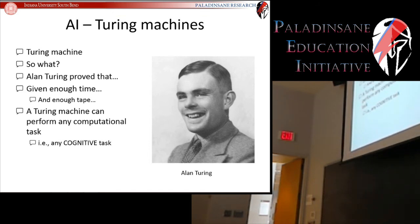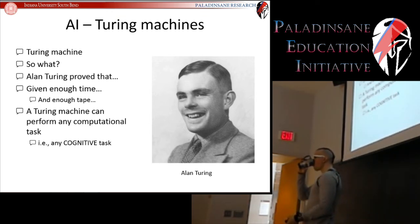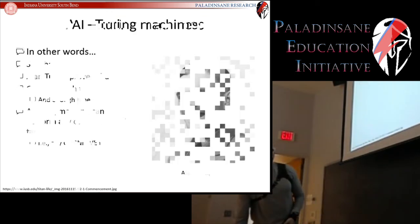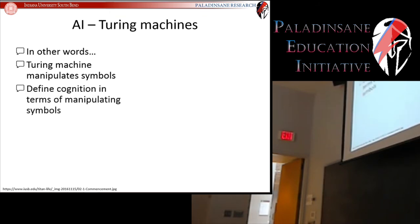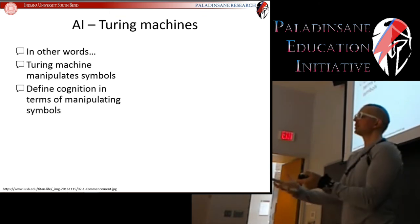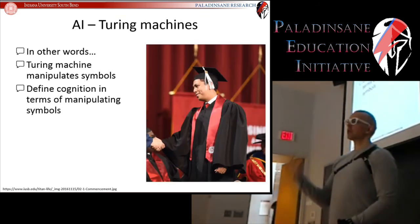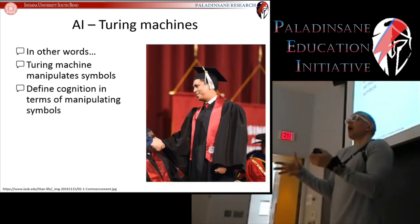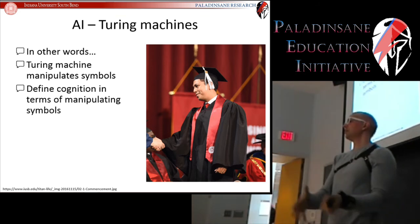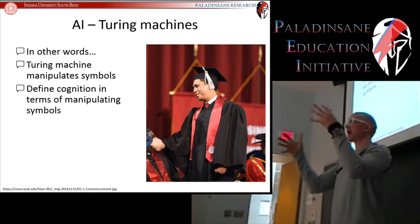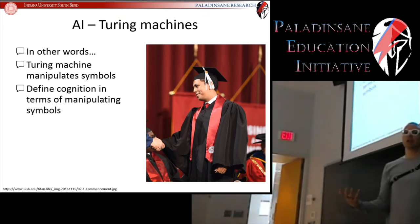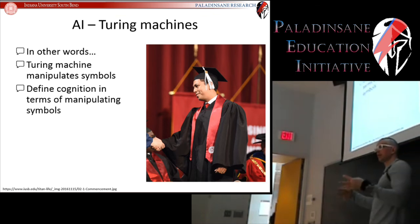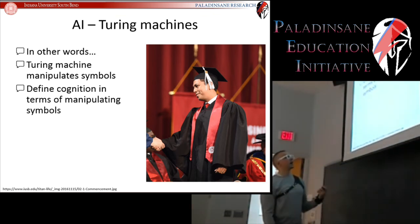In other words, Turing machines manipulate symbols — they define cognition in terms of manipulating symbols. That's why in cognitive psychology, everything we're going to see is all about manipulating symbols: how do we represent it, what are the symbols, and how do we manipulate those? Because Alan Turing showed that this can be used to perform any cognitive task.